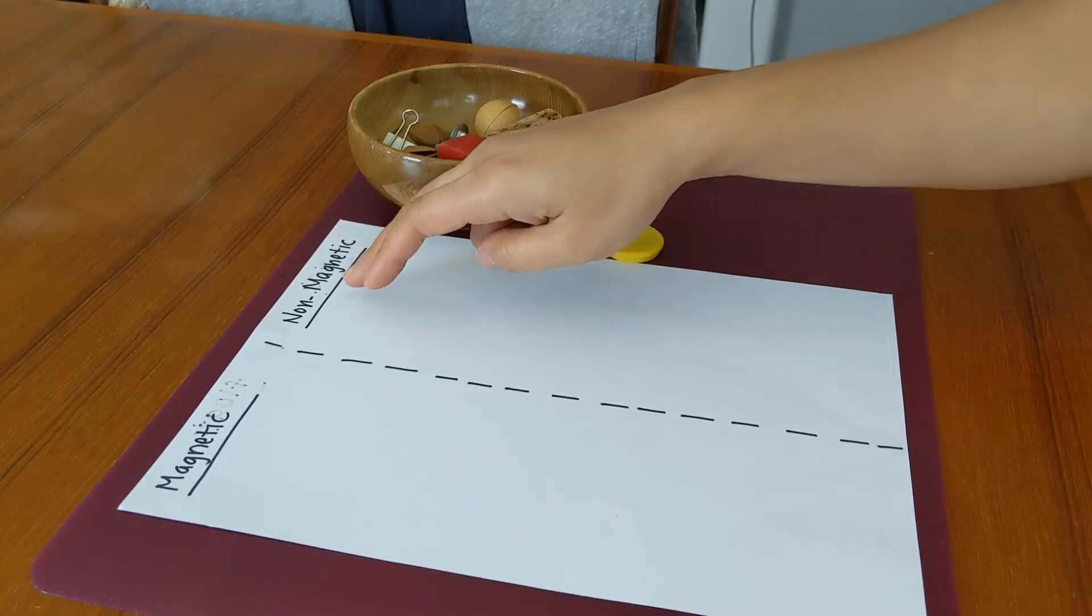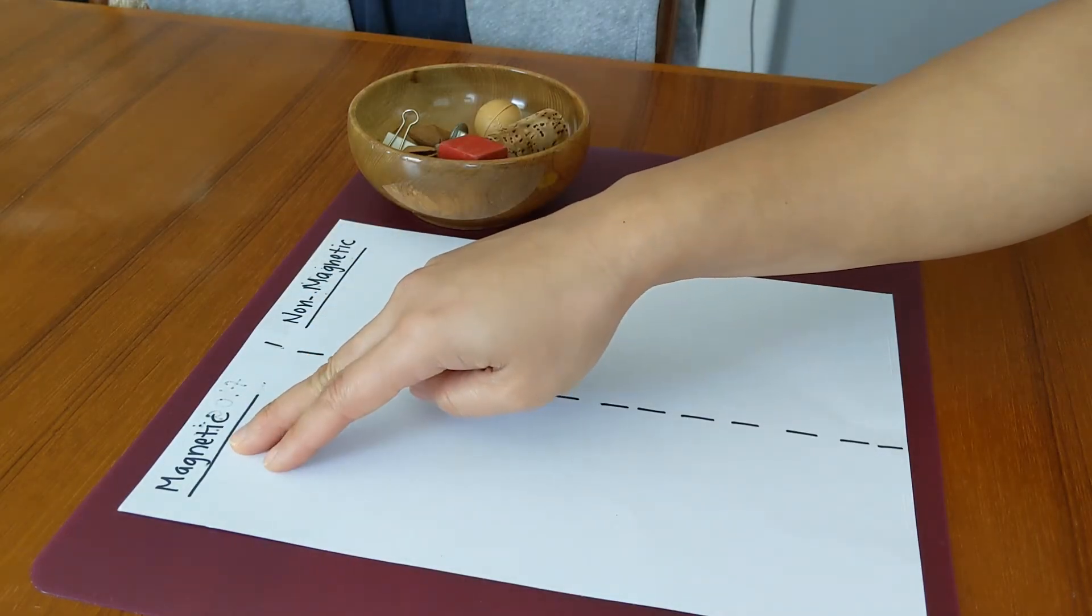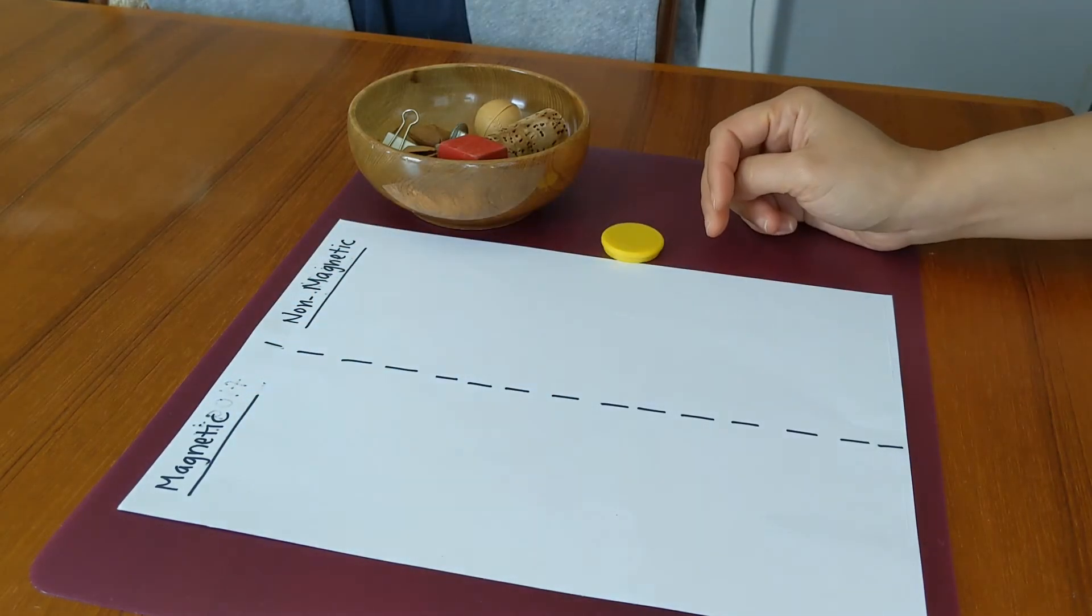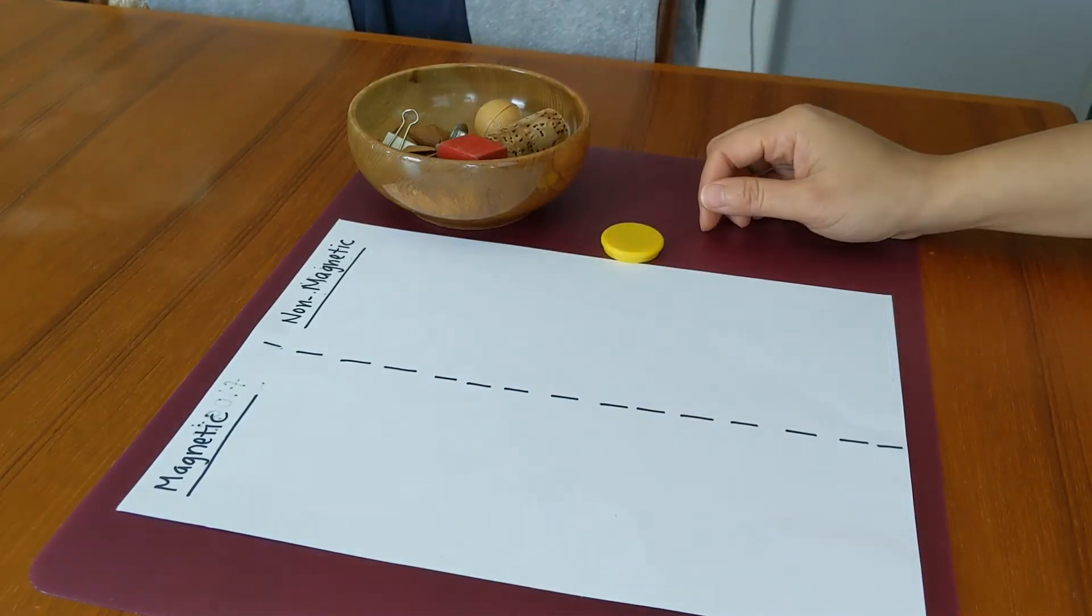And on this paper I have here non-magnetic and I have here written magnetic. And depending on the object, I will put them in this pile or this pile. Alright, let's start.